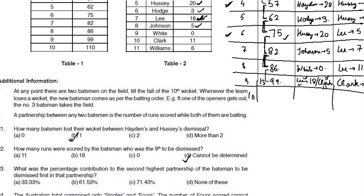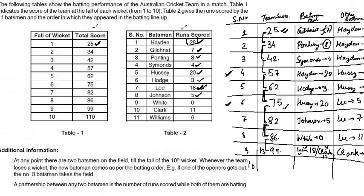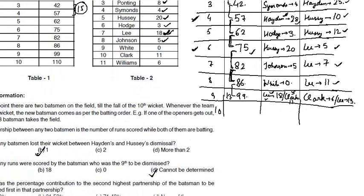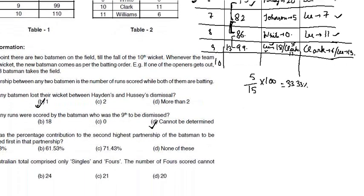The next question was: what was the percentage contribution to the 2nd highest partnership of the batsman to be dismissed first in that partnership? The 1st highest partnership was 25 runs — the 1st wicket partnership. The 2nd biggest partnership was the 4th wicket partnership of 15 runs. Hayden got out first in that partnership, scoring from 23 to 28 — so he scored 5 runs out of 15. That gives 5 out of 15 times 100 = 33.33%. The answer is option 1.